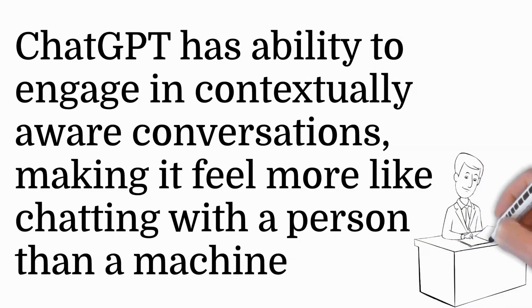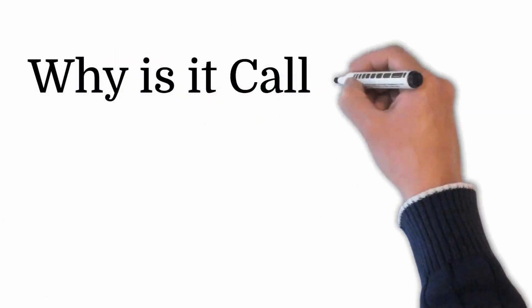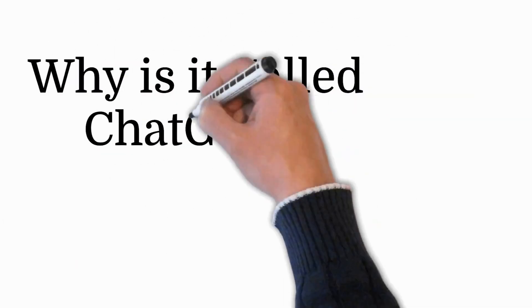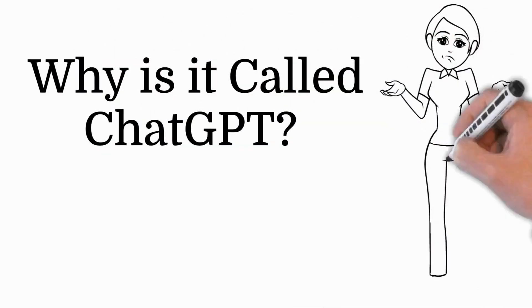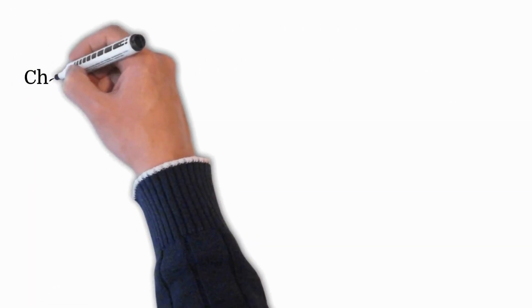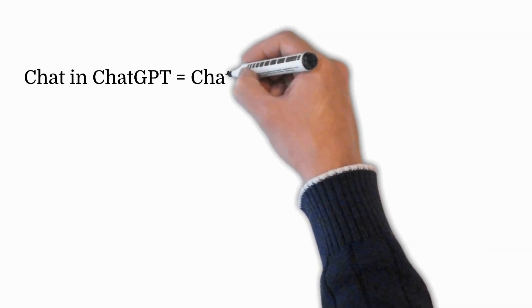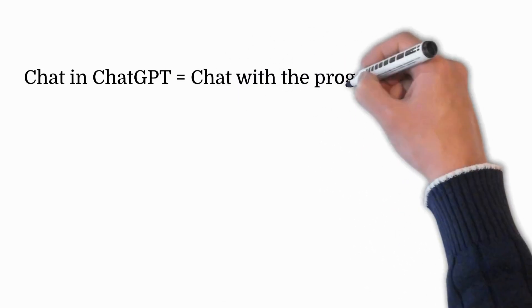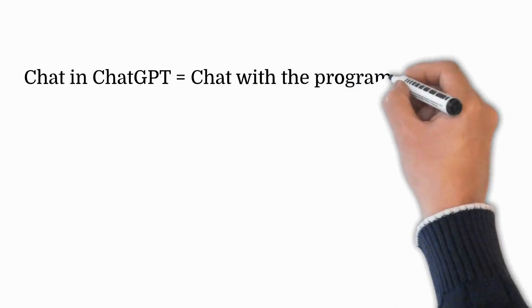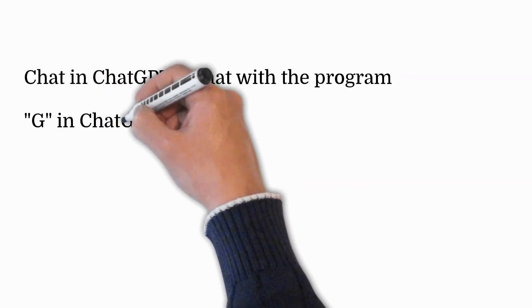Why is it called ChatGPT? The 'chat' part is straightforward — it refers to its primary function: engaging in conversational dialogue. The letter G in ChatGPT stands for 'generative' — it creates new content, such as responses in a conversation.